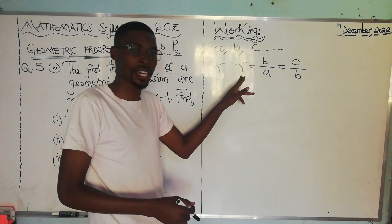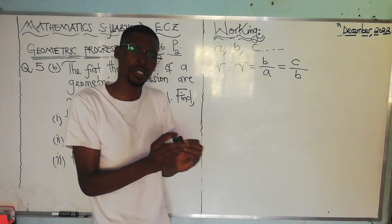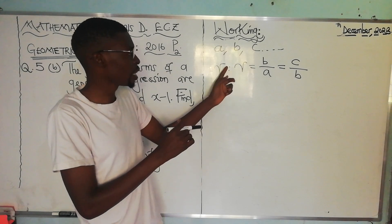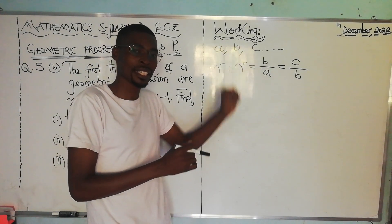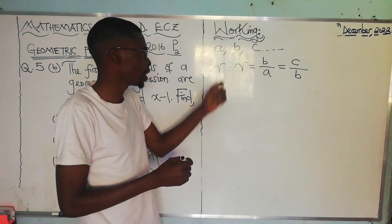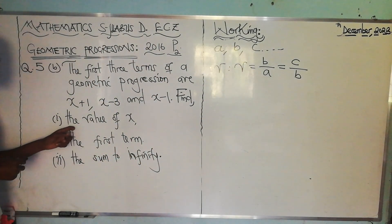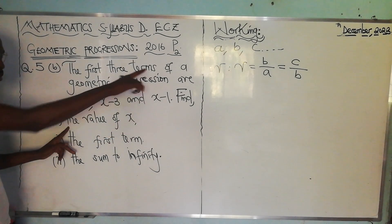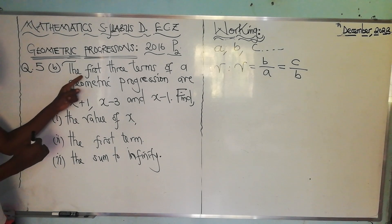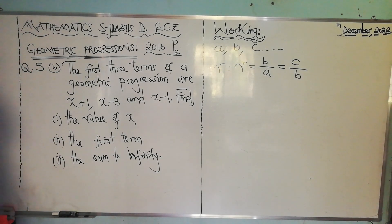The common ratio r is such that r equals b over a, which is the same as c over b. You must have a common ratio r such that when you divide the second term by the first term, you get the same value as when you divide c by b — that is, the third term by the second term. That value is called r, the common ratio. This is the property we are going to use to solve for x.